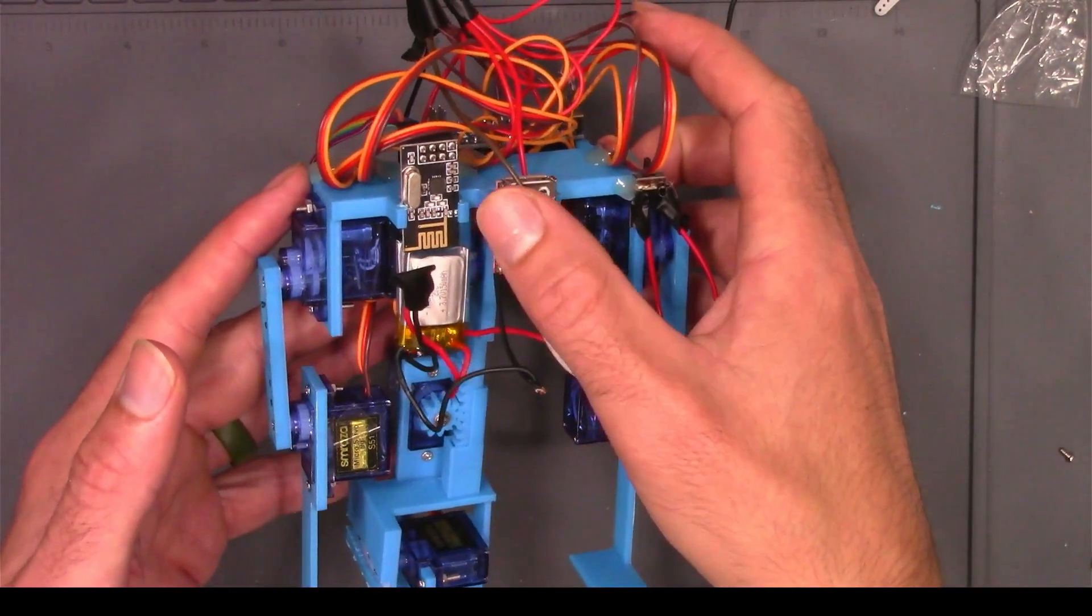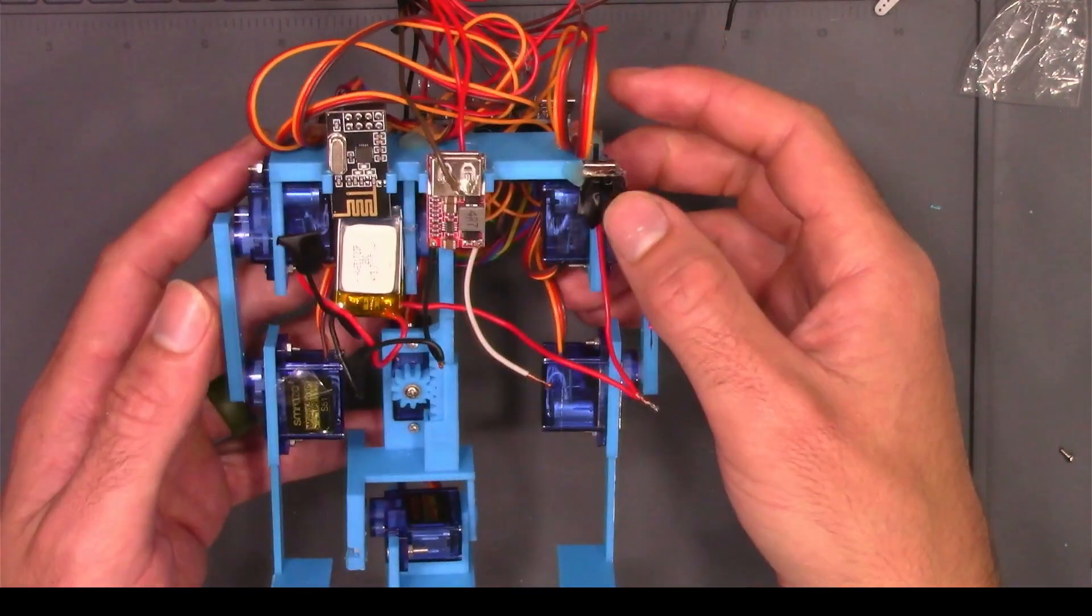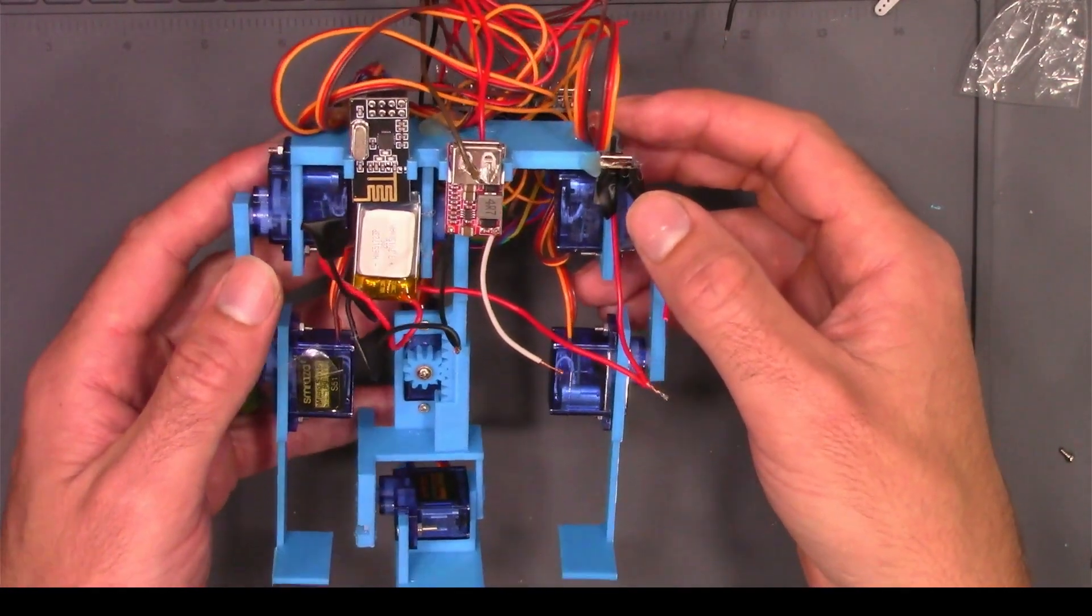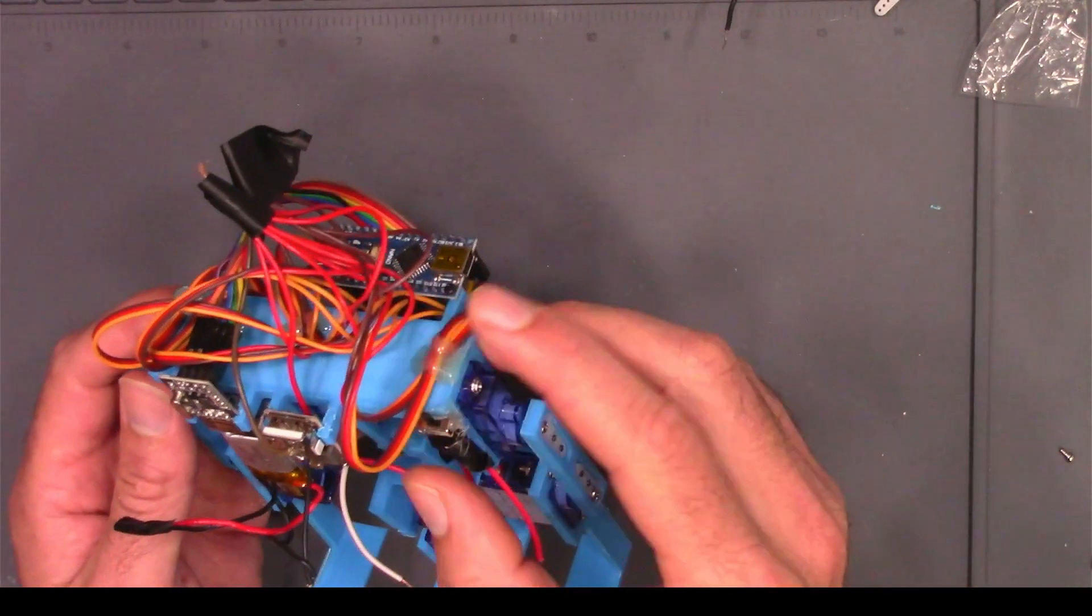We have a spot for our batteries, and we have this wireless chip that we're going to use to send walking sequences so we don't need to plug them in to the Arduino.